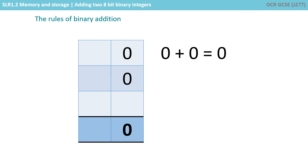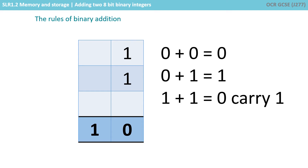The rules are quite simple. A 0 and a 0 in binary equals 0. A 0 and a 1 equals 1. A 1 and a 1 can't equal 2 because we don't have a 2 in binary, so a 1 and a 1 equals 0 and we carry a 1 to the next column, because 10 in binary is the denary number 2.